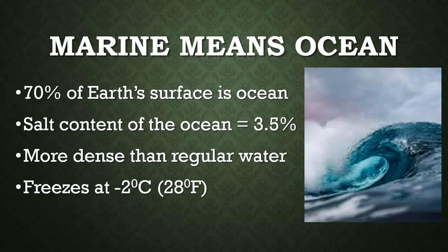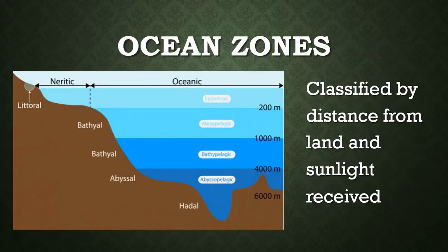I'm going to start with marine ecosystems. Some fun facts about the ocean: 70% of the earth's surface is ocean, which means only 30% is covered by land. The salt content of the ocean is 3.5% — if you had a liter bottle, 35 grams of that would be salt. Due to that salt content, it is more dense than regular water, and it also causes the ocean to freeze at a couple degrees lower than regular water. The ocean has a lot of zones, and the zones are classified by how close they are to the land and how much sunlight they receive.